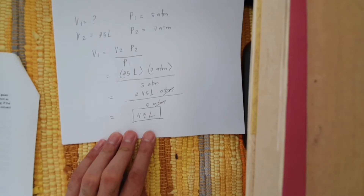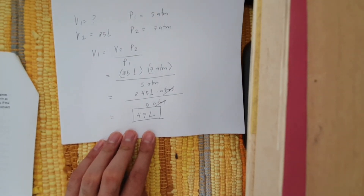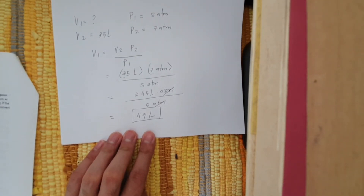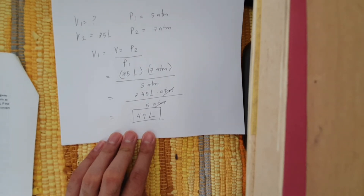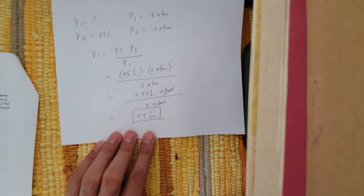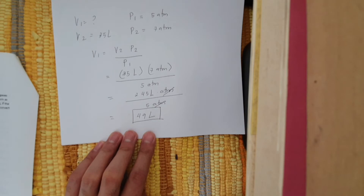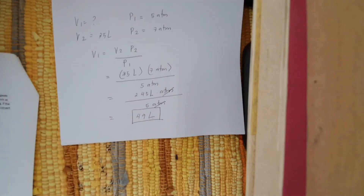So kung napansin ninyo, ang Boyle's Law problem is just, you know, trying to multiply and divide lang. So hindi siya masyadong complicated actually. It will only be complicated if we go to worded problems, because some of you ay mas madaling ma-confuse sa mga worded problems.